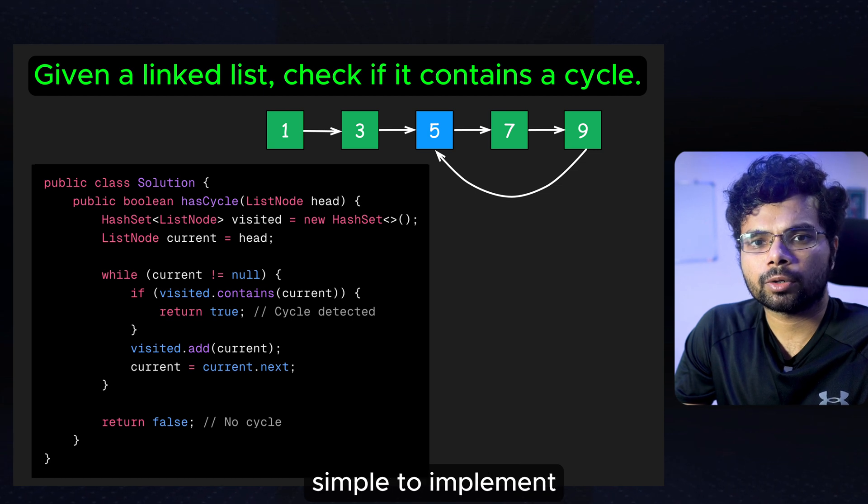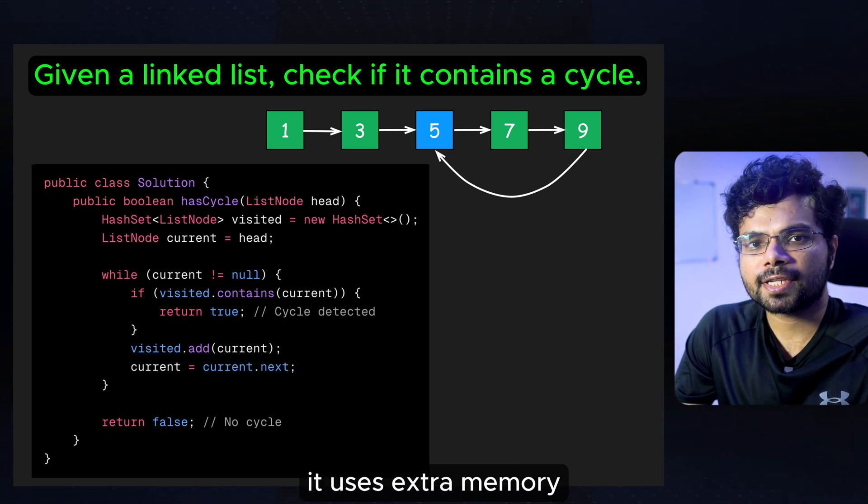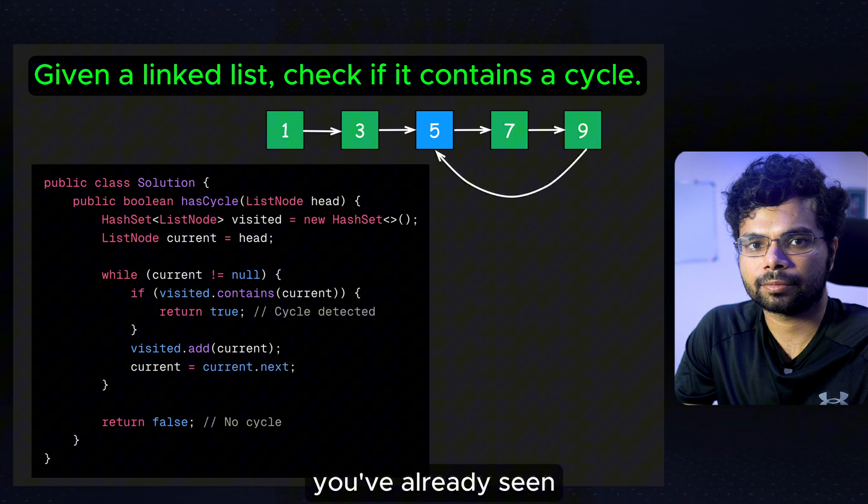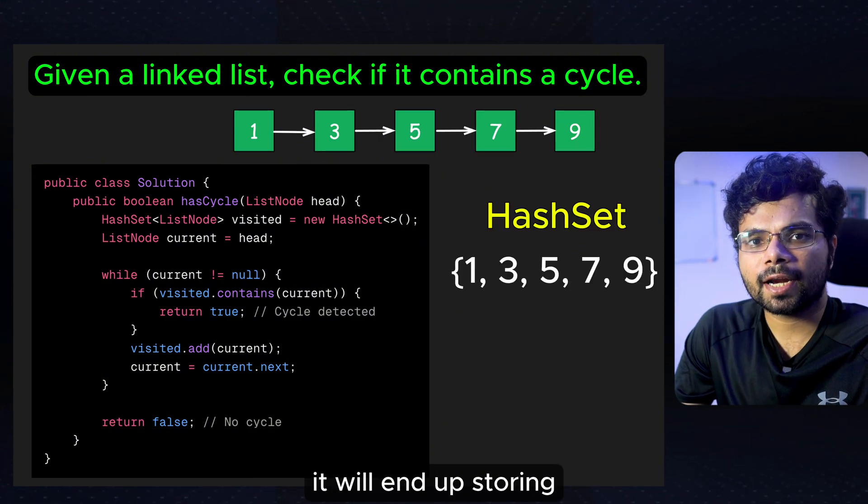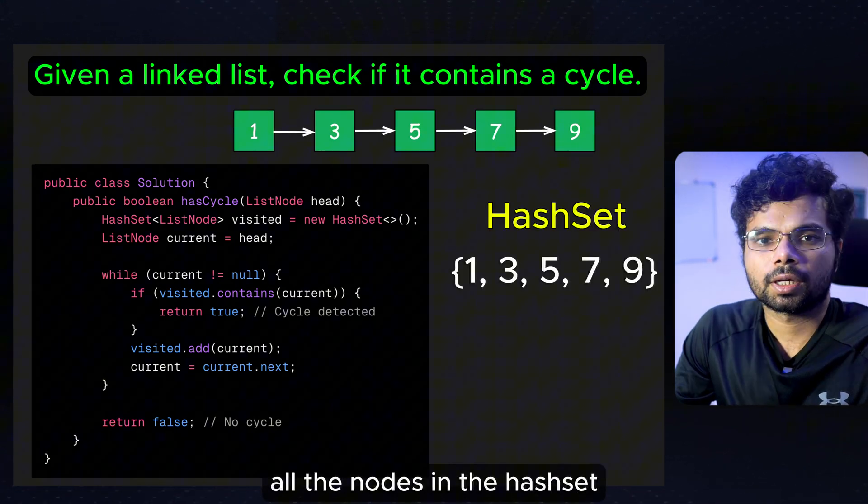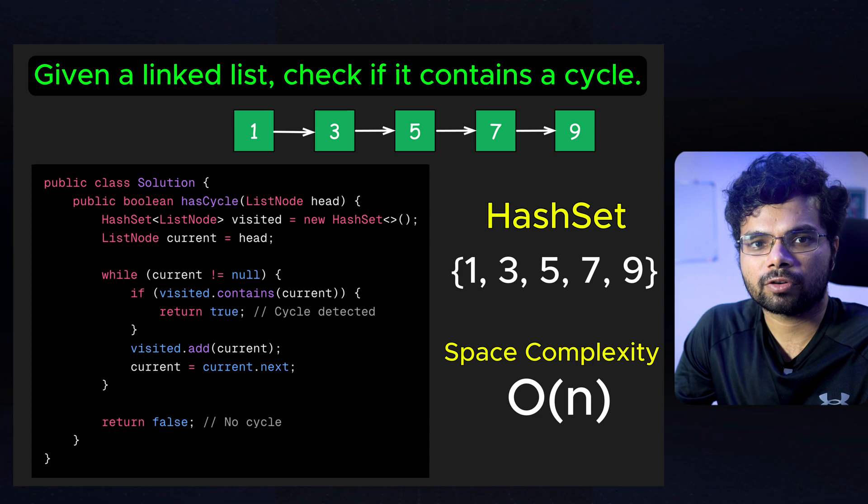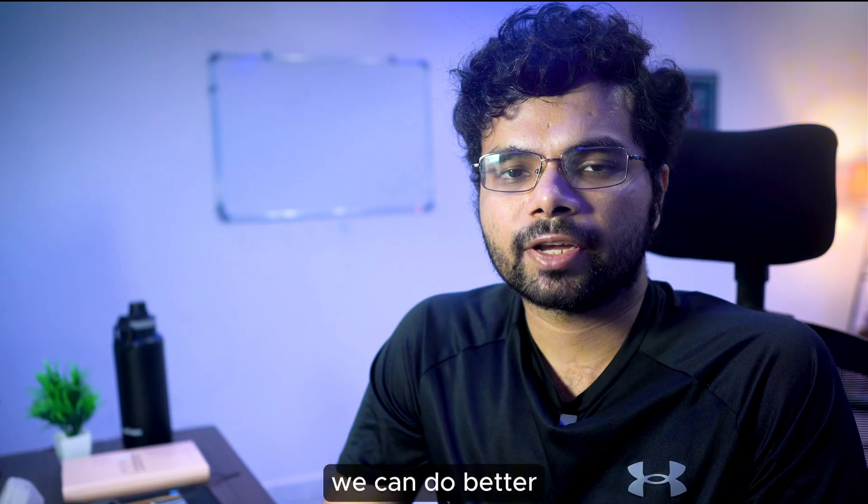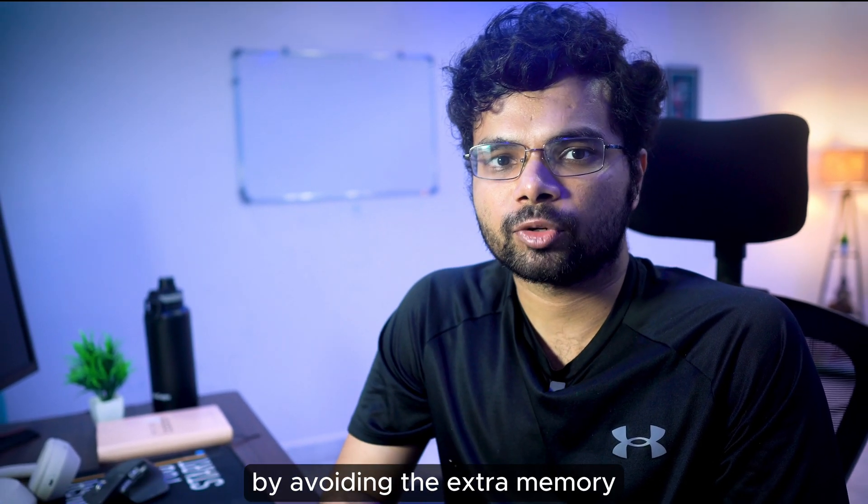This method is simple to implement. But there is a catch. It uses extra memory to keep track of the nodes you have already seen. If there is no cycle in the linked list, it will end up storing all the nodes in the hash. This leads to a space complexity of O(n) where n is the number of nodes. We can do better by avoiding the extra memory.